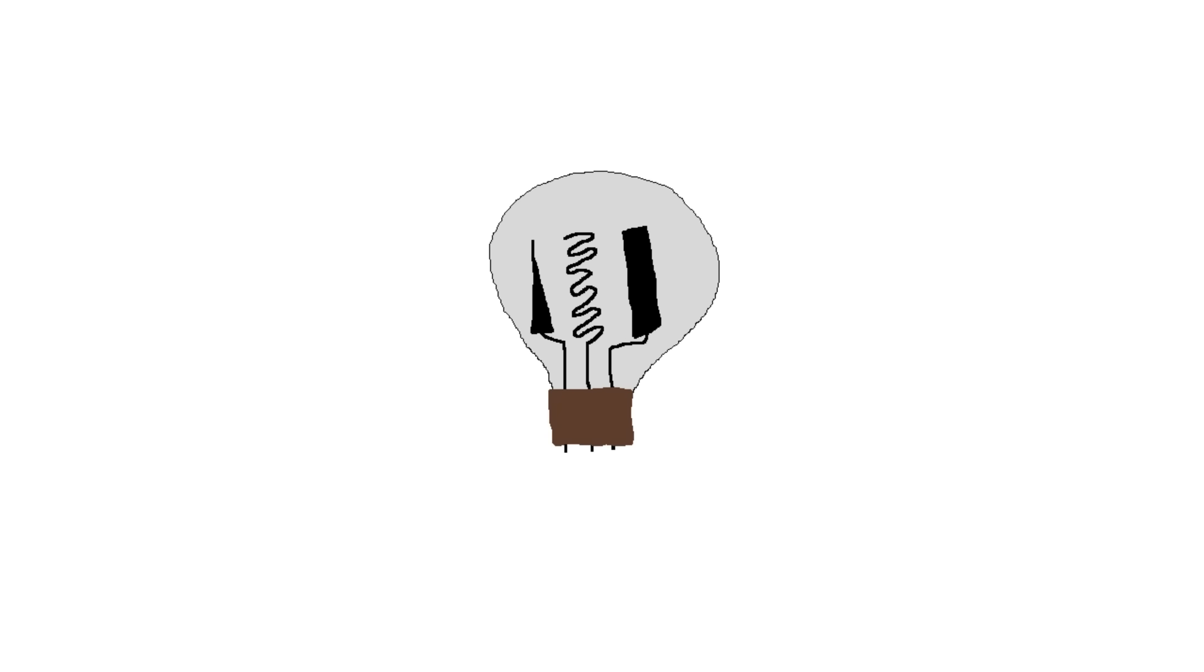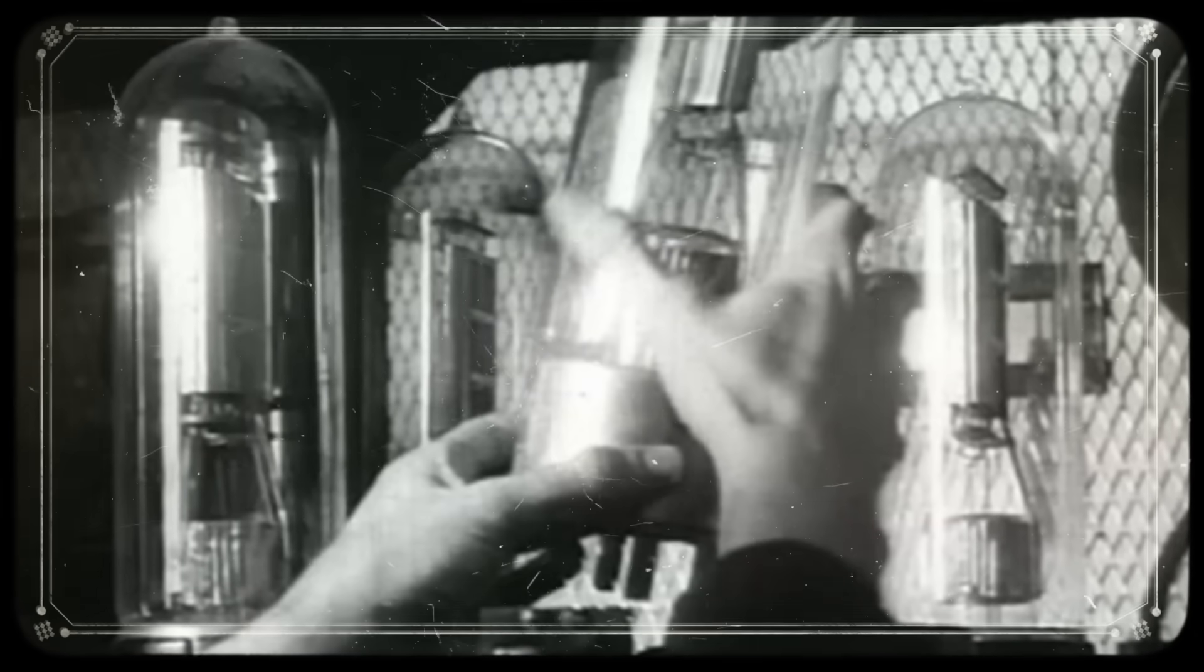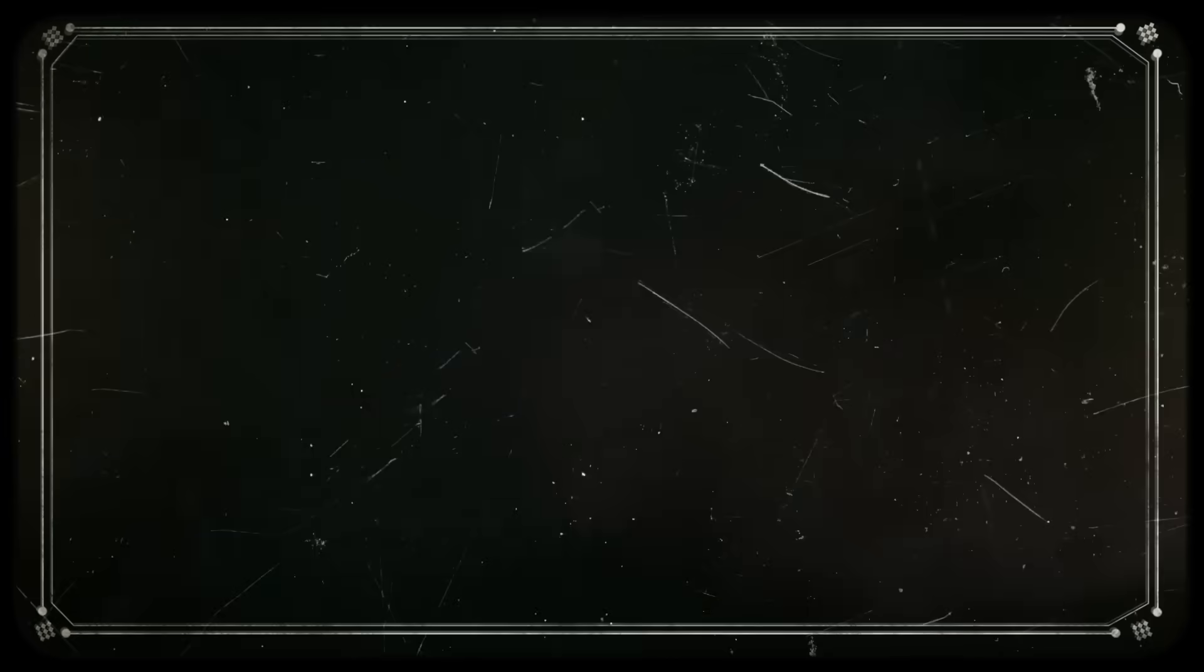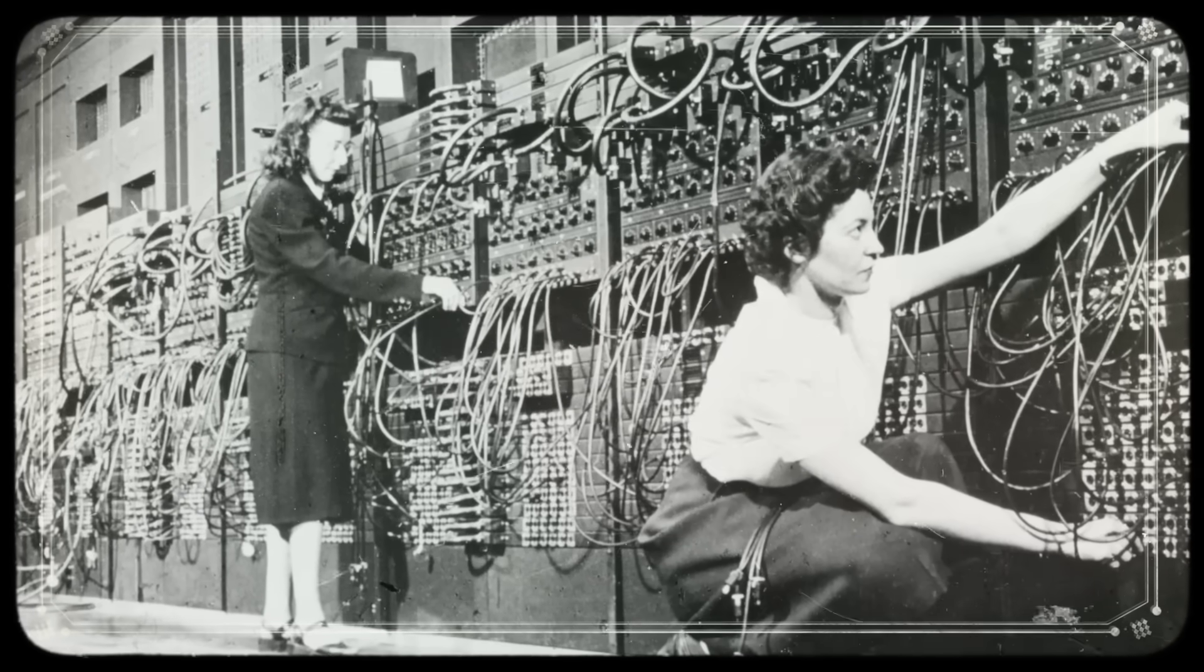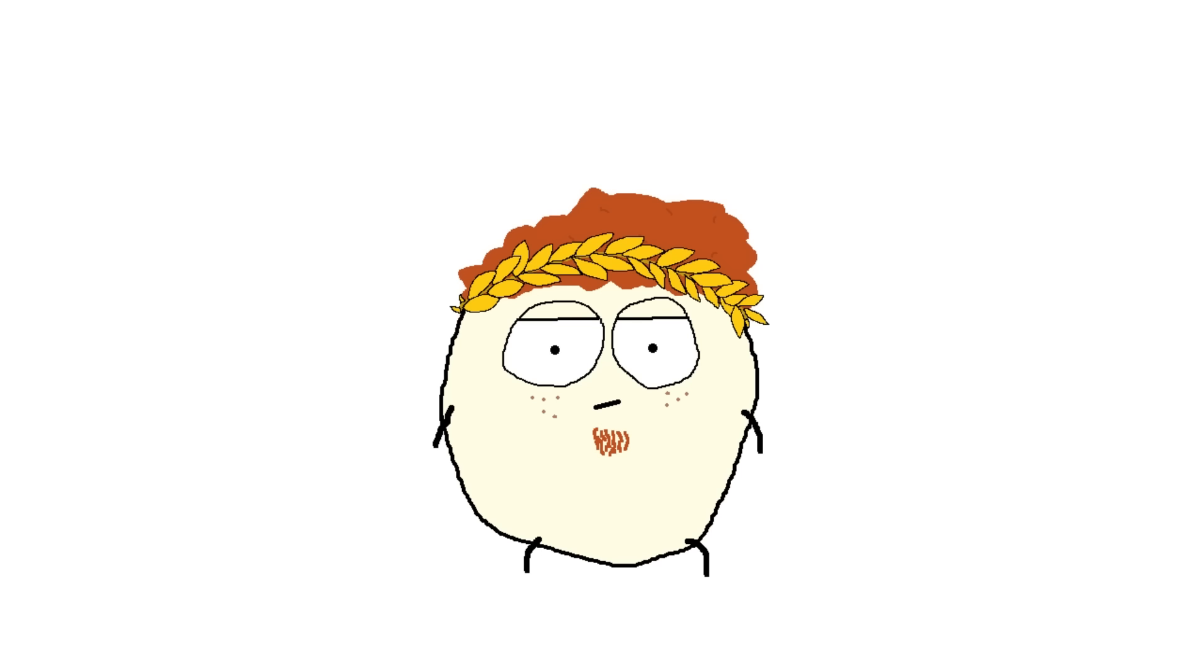They consist of just a heated cathode, control grid, and anode vacuumed inside a glass bulb. First invented in 1904, they powered early computers like the ENIAC which came out in 1946 and used 17,000 of them. Fred won't need that many, he's not building Facebook.